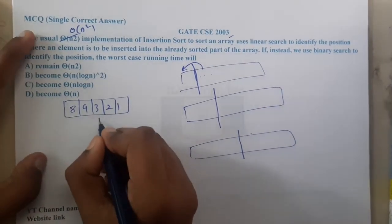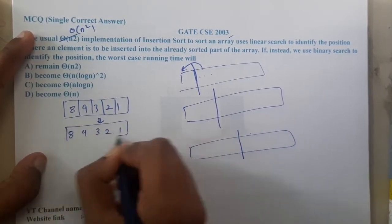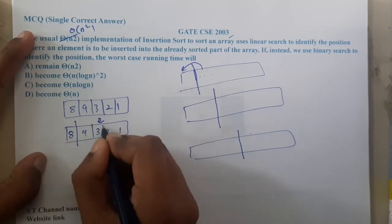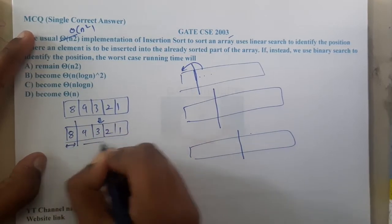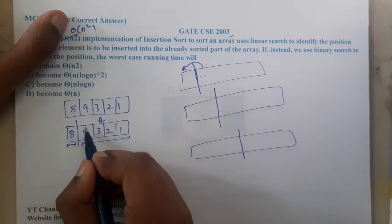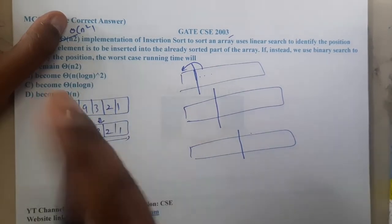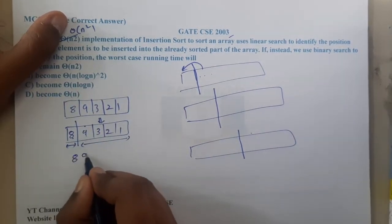Now if I want to run insertion sort on this, the first step what I do is I will assume 8, 9 as already sorted. I will assume this as a sorted array and this array as unsorted. Once I have done this, I will take this 9 and I will start comparing with the before value and I will place this value at that approximate location. So here it will be 8 and 9, and this will be the sorted location.